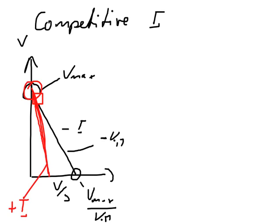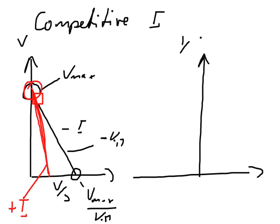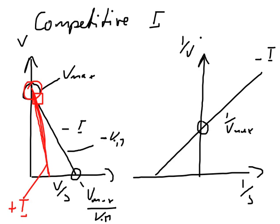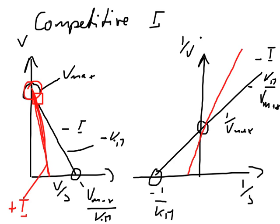Now let's look at how this would appear in a Lineweaver-Burk plot — one over V versus one over S. Without the inhibitor, this point gives us one over Vmax, the gradient is Km over Vmax, and the x-intercept is minus one over Km. For a competitive inhibitor, the one over Vmax value stays the same — that is a typical Lineweaver-Burk plot for a competitive inhibitor.